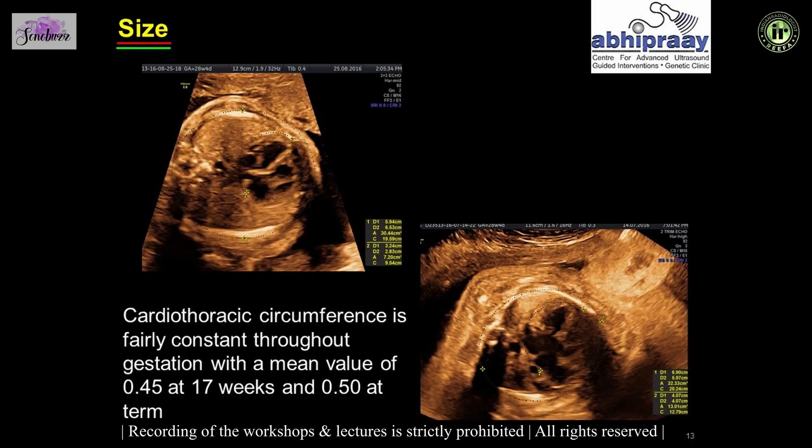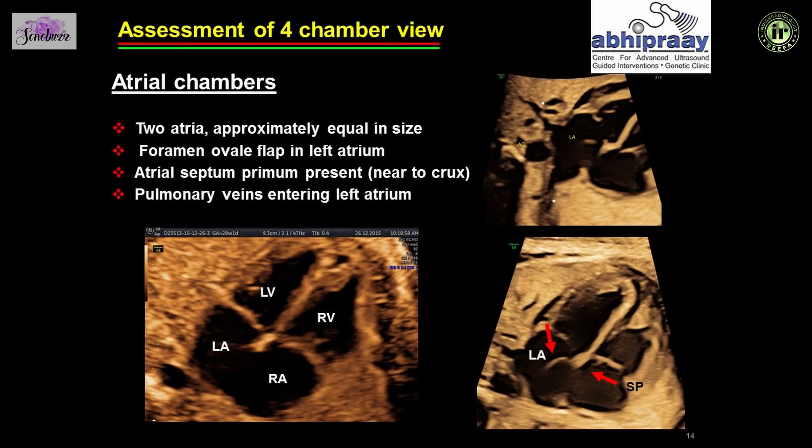You calculate the heart size by eyeballing but actually measure it by calculating the cardiothoracic circumference ratio, which has a mean value of 0.45 at 17 weeks and 0.5 at term. So roughly the heart has to be half the size of the thorax.